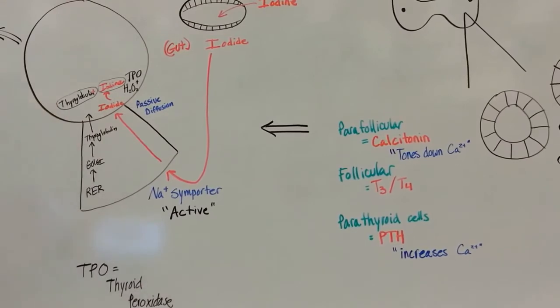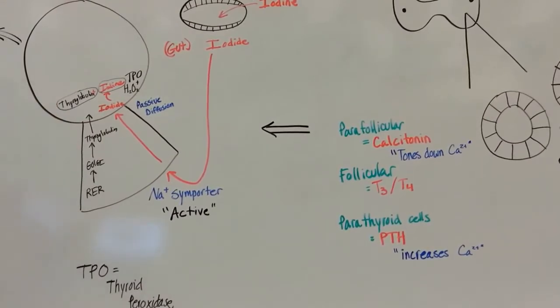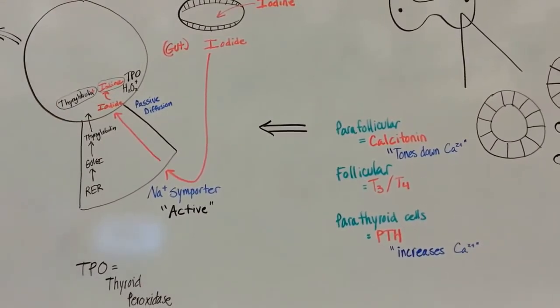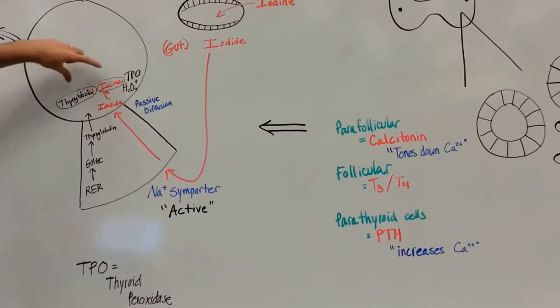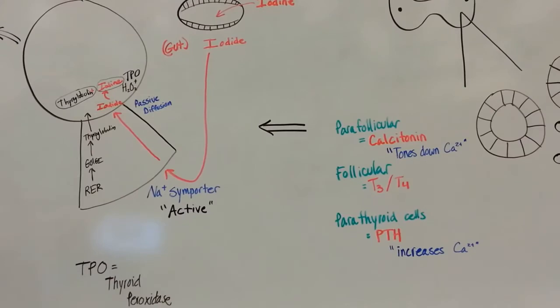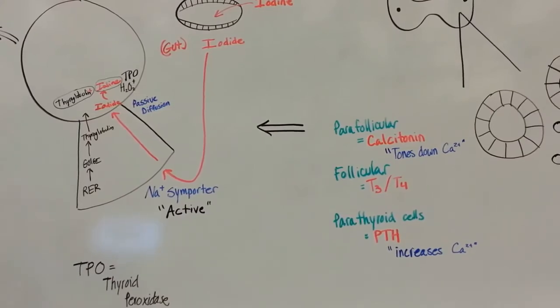Each thyroglobulin has multiple tyrosine residues on it, somewhere between 120 and 140, depending on the sources. So you've got the thyroid peroxidase enzyme that's going to combine your iodine into your thyroglobulin tyrosine residue. And we'll cover that later.